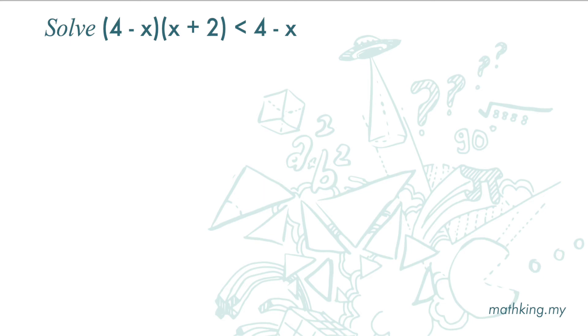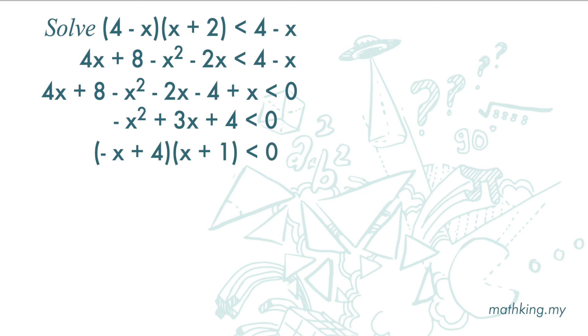We have to expand the left hand side first. Then we move 4 minus x to the left hand side. And we get negative x square plus 3x plus 4 is less than 0. We factorize it again. And we get negative x plus 4 times x plus 1. So if negative x plus 4 times x plus 1 equals 0, then x equals 4 and negative 1.